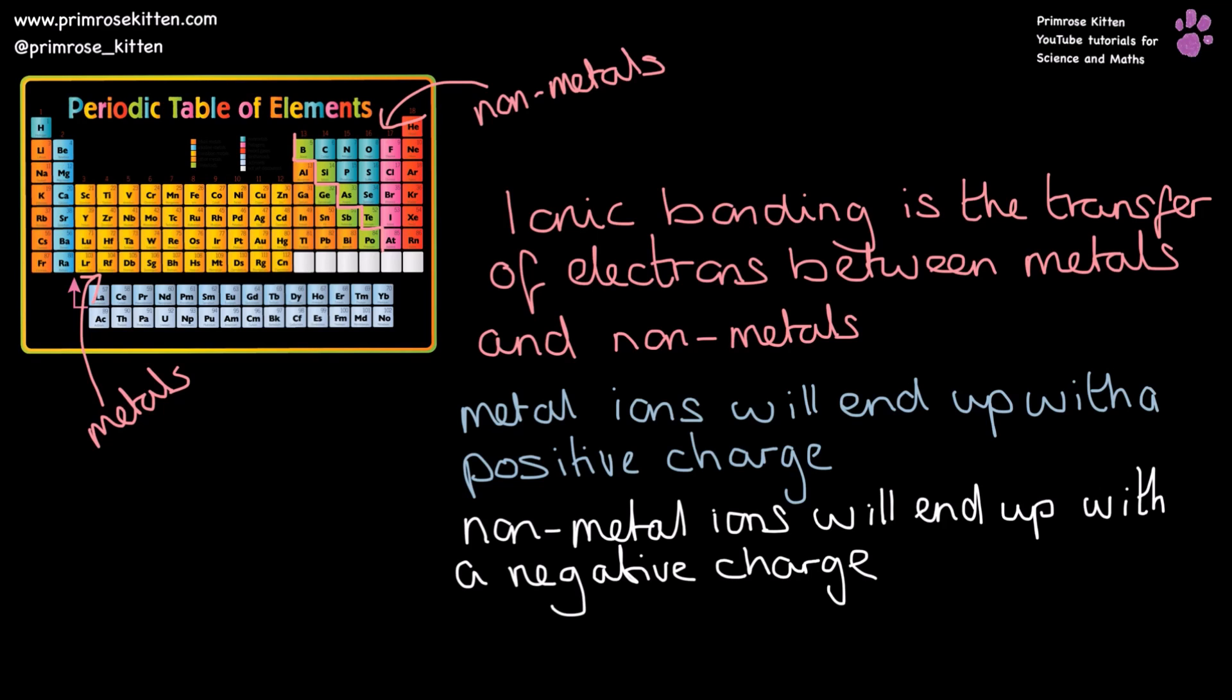Now, I would love for you to be able to remember how it's worked out properly, but as a quick cheat: things in group one are going to have a plus one charge, things in group two are going to have a plus two charge, things in group six are going to have a minus two charge, and things in group seven are going to have a minus one charge.